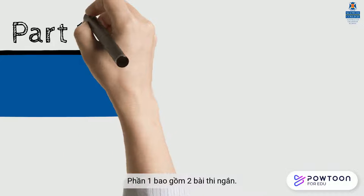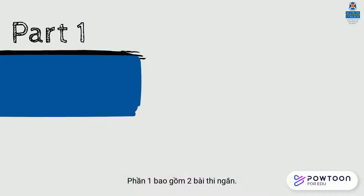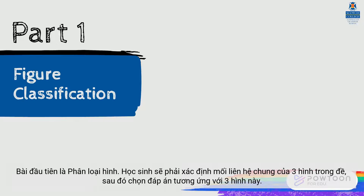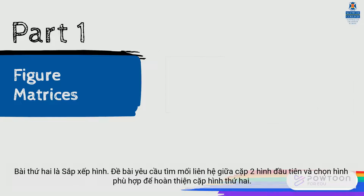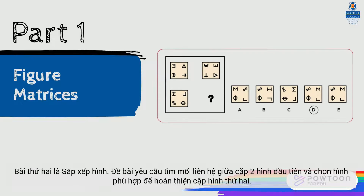Part 1 combines two short tests. The first test is Figure Classification — you will identify the conceptual link all three figures have in common, and then select one figure that goes with the first three. The second test is Figure Matrices — you will work out how the first pair of figures is related to each other, and then select one figure that completes the second pair.